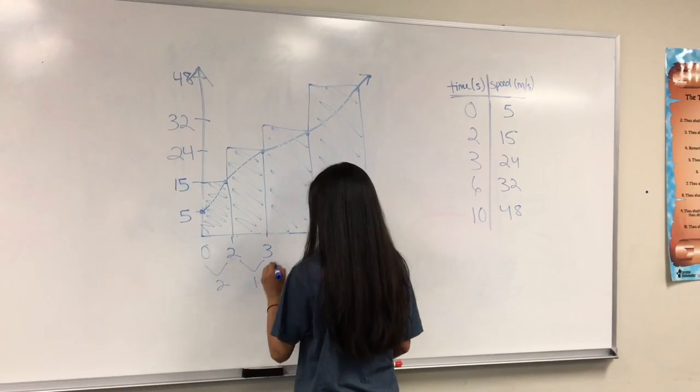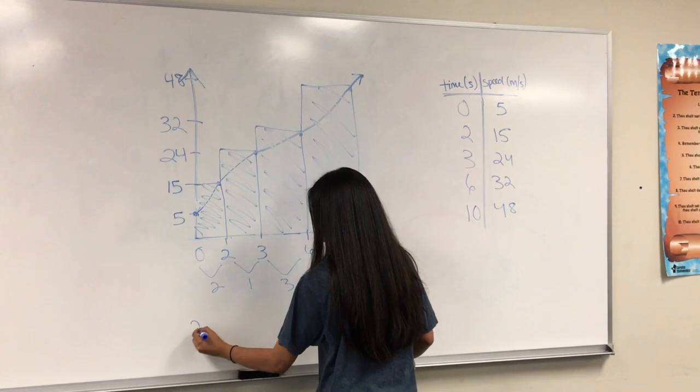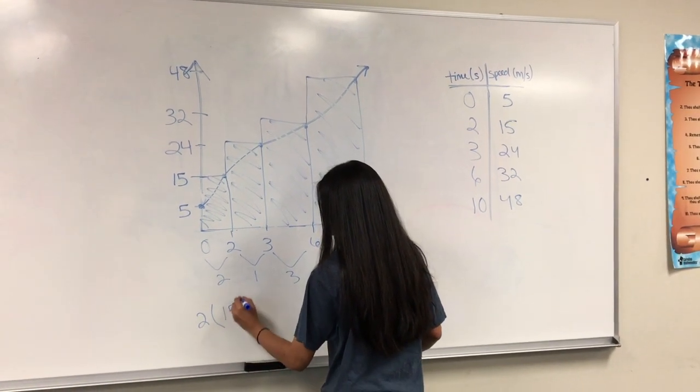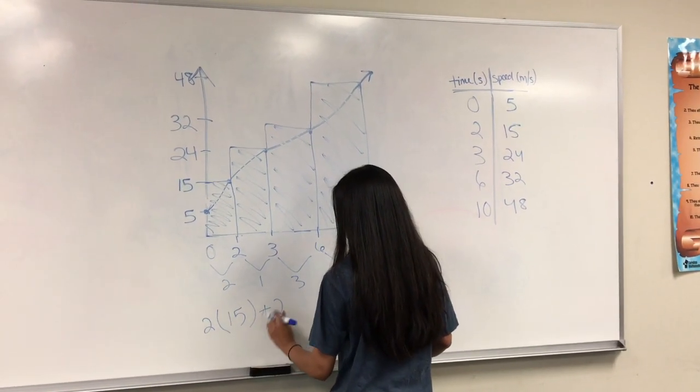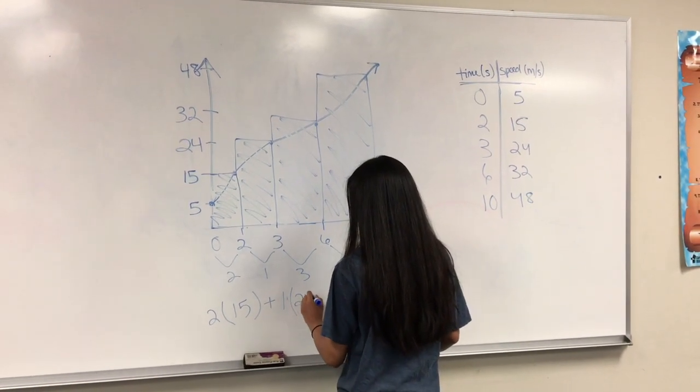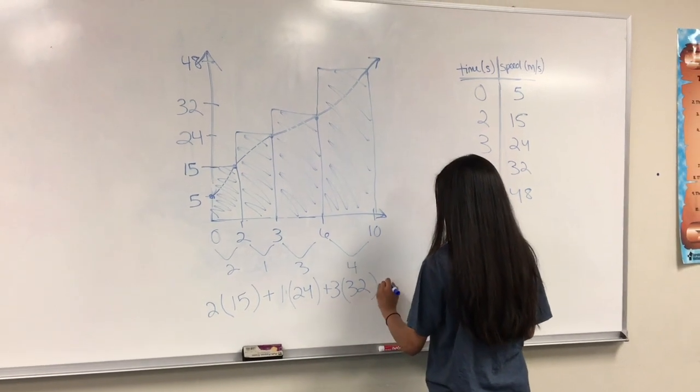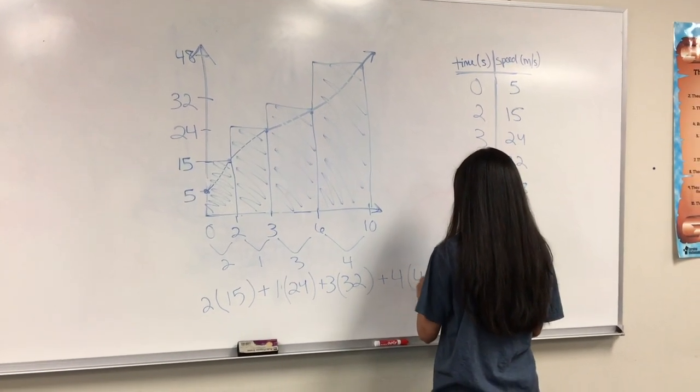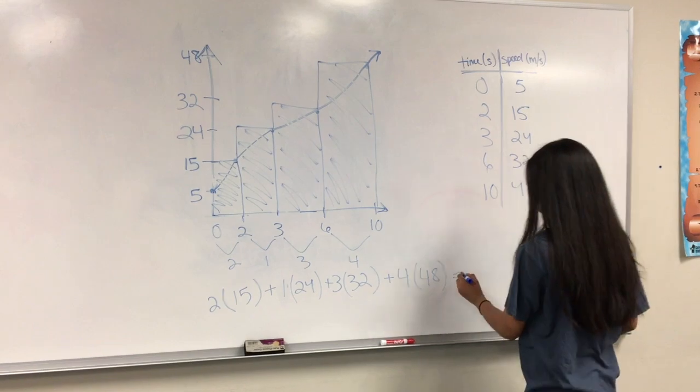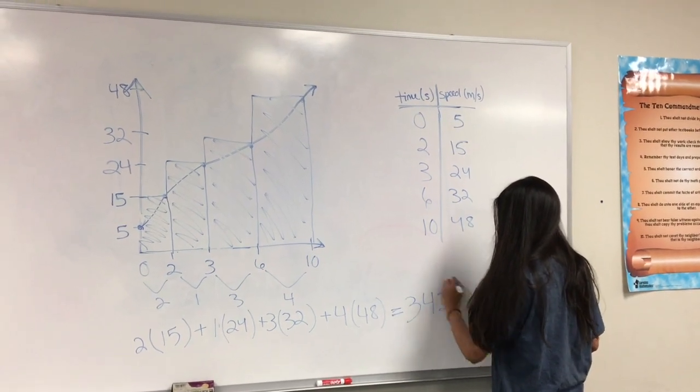Now using the right Riemann sum to approximate, we will use rectangles where the top right corner of the rectangles touch the function. The process to use this method is exactly the same as LRAM. However, the values that are plugged into the formula would be different. For this method, you would only use the y values that correspond to the right sides of the rectangles. Again, you would multiply the width of each rectangle with its corresponding height, and add the areas to get the final area of the region below the curve, which comes out to be 342 meters.